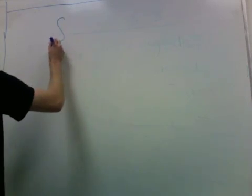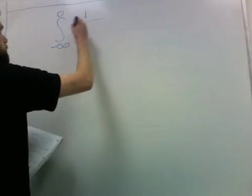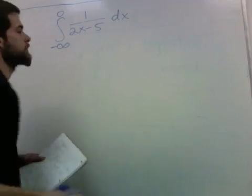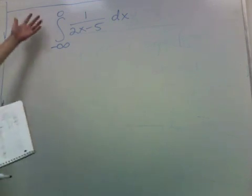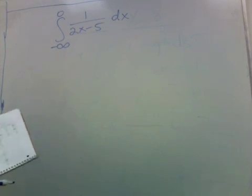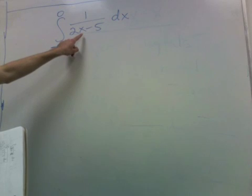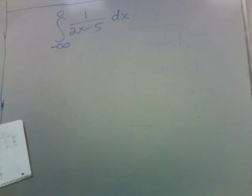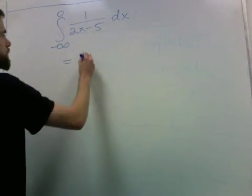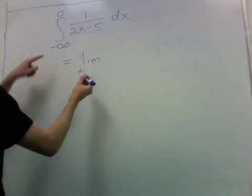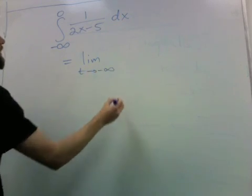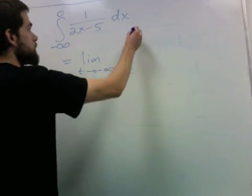So now let me give some examples of how we deal with these things. This has an infinite interval that we're integrating over, so it's certainly improper. We don't have to worry about any discontinuities because this is discontinuous when x equals 5/2, and that's not in this interval. But by definition, something like this is equal to a certain limit. So it's the limit as t goes to negative infinity of the integral from t to 0.